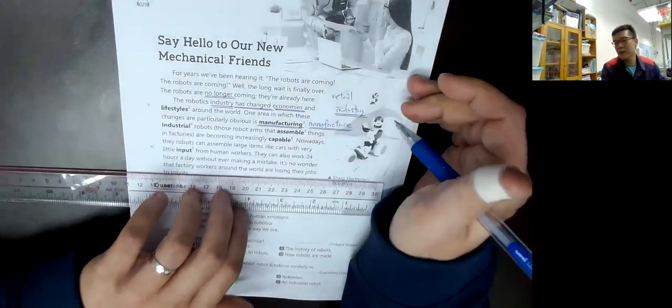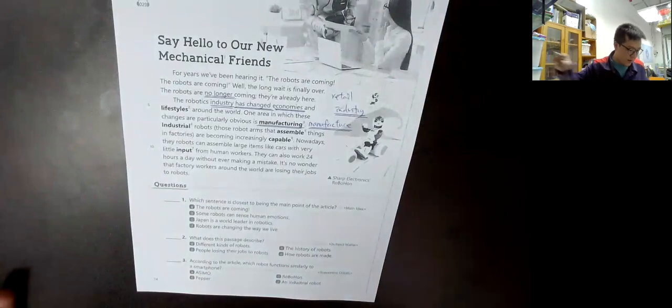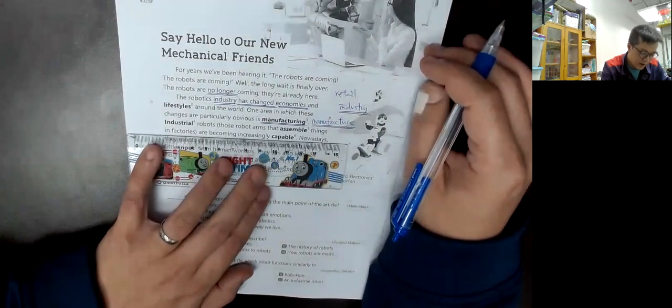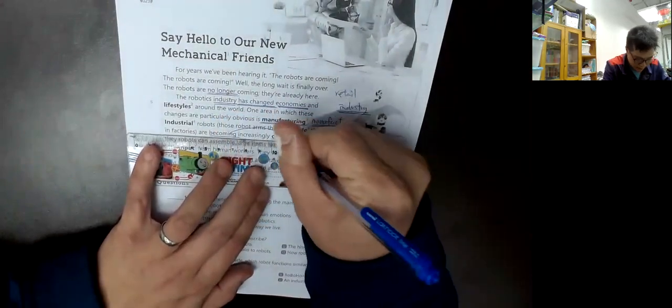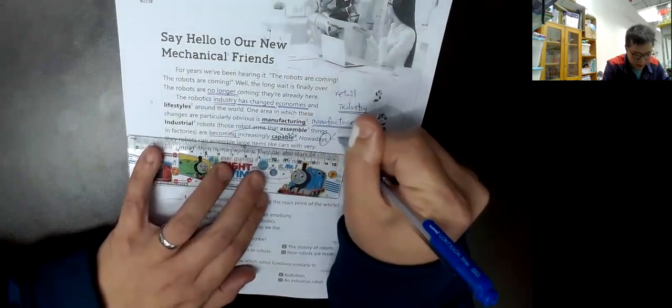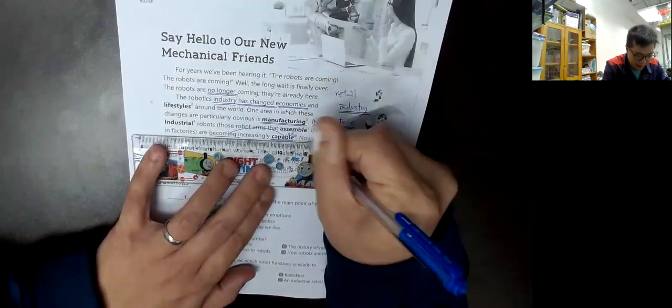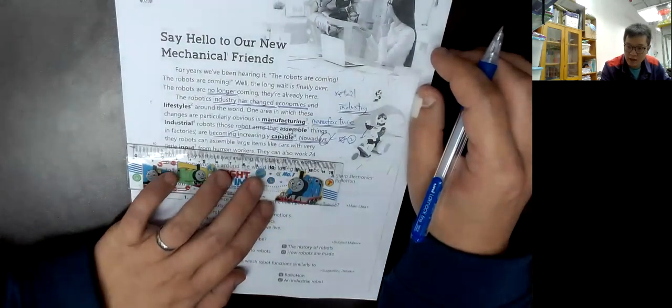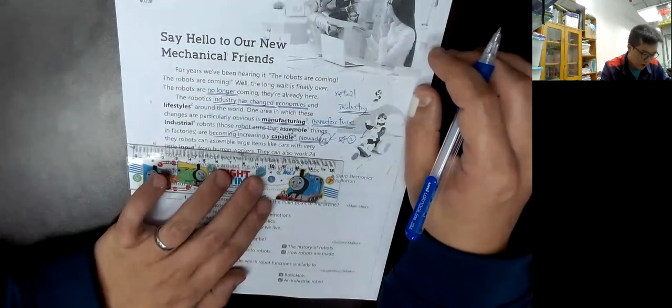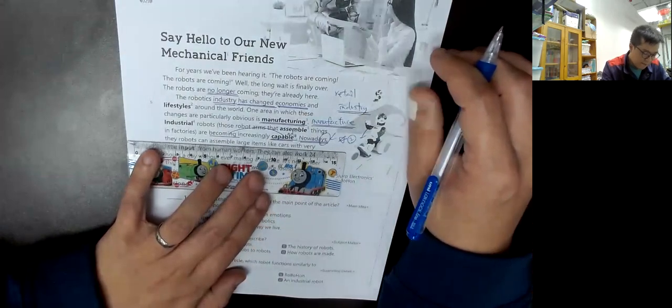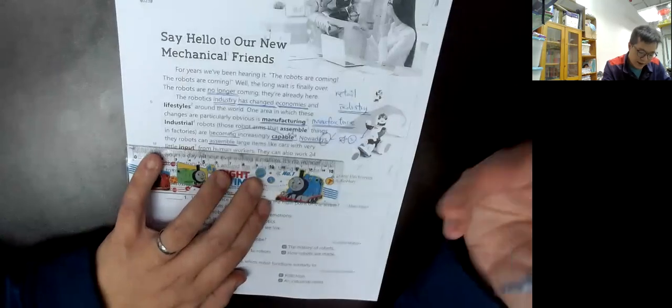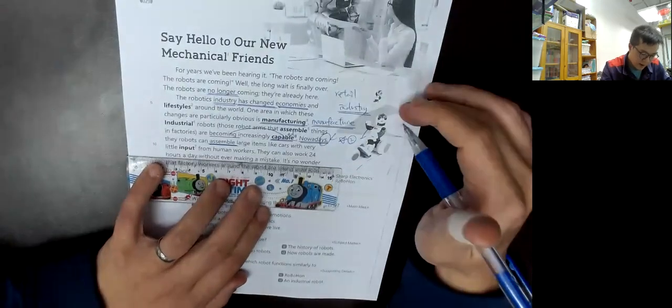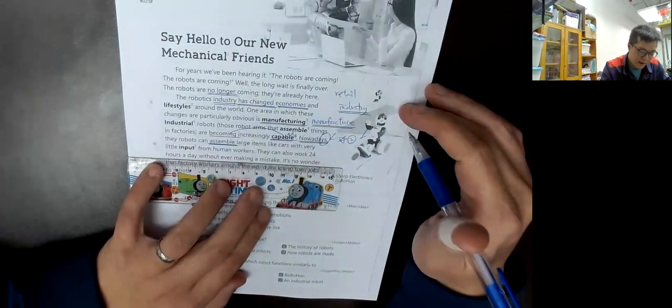Manufacturing. Industrial robots, those robot arms that assemble things in factories, are becoming increasingly capable. Nowadays, robots can assemble large items like cars with very little input from human workers.